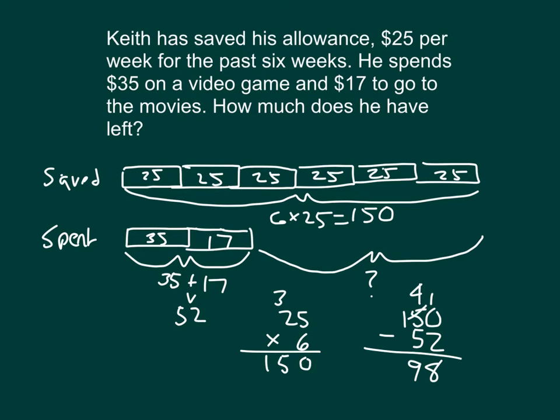Expressing that clearly, Keith has $98 left after he spends $35 on a video game and $17 to go to the movies. As we're looking through this problem, we carefully read that, typically twice, draw that picture, show our work, and make sure to express our answer clearly. Does this make sense? If he has $98 left, $98 can't be more than the amount that he saved, so that makes sense. And we are showing that he spent the $52.